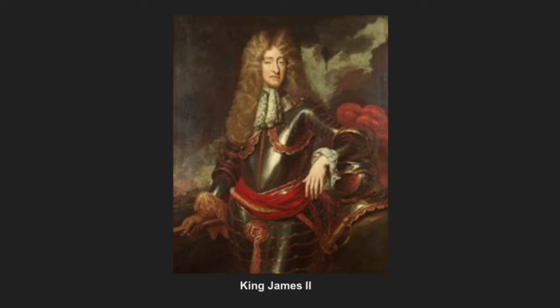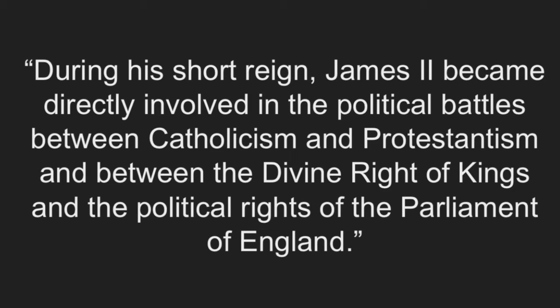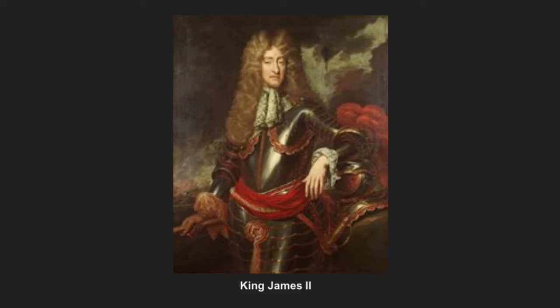The Glorious Revolution is characterized by the switch in the British government from an all-powerful monarchy system to a system that gave the parliament more control. This was caused mainly by James II's endeavors to create a centralized Catholic government and an increasingly Protestant population. According to LumenLearning.com's lesson on the Glorious Revolution, during his short reign, James II became directly involved in the political battles between Catholicism and Protestantism, and between the divine right of kings and the political rights of the Parliament of England. The divine right of kings refers to the idea that kings have the God-given power to rule absolutely. This ideal, combined with his Catholic beliefs, put James at odds with the growing Protestant population and those who desired a more parliament-based governing system.